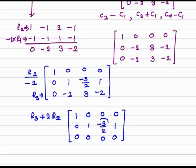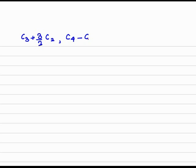To make the right-side entries of the second leading one into zero, we apply column operations: C3 plus 3/2 times C2, and C4 minus C2. Applying these column operations, we get: 1, 0, 0, 0 / 0, 1, 0, 0 / 0, 0, 0, 0.